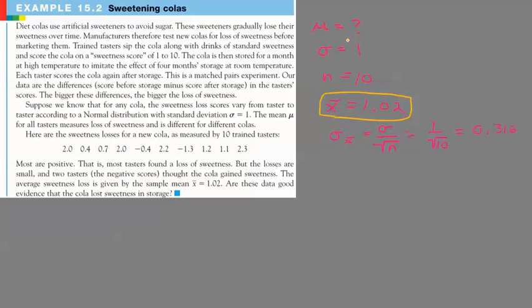So while we don't know the mean of our population, what we're going to do is assume that there is no change. And if there is no change in sweetness, because the change in sweetness is something that is subtracted, then that means that our population mean is going to be zero, representing no change in sweetness.